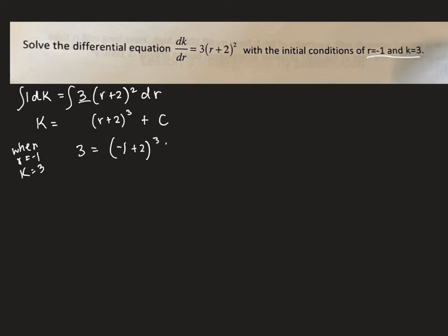So we're going to sub that in, three for k, negative one for r, and we solve. We'll simplify that to get one cubed which would be one plus C, and then move the one over to get C equals two.